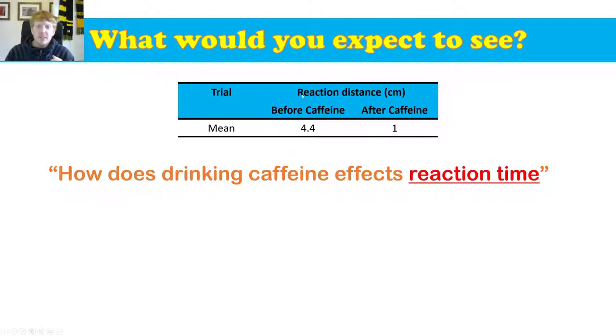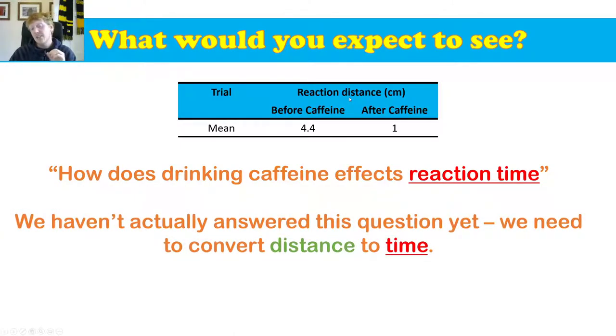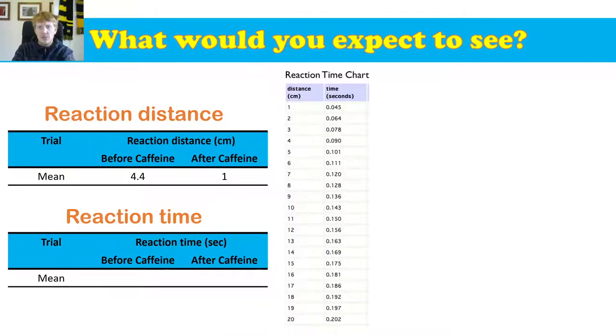Okay, so you'd expect to see something like this, that caffeine speeds up your reaction time so you catch the ruler much faster. But the question at the start was how does drinking caffeine affect reaction time? But if you look here, we've actually measured reaction distance. So we haven't actually answered the question, we need to convert distance into time. To do that, we just use a conversion chart.